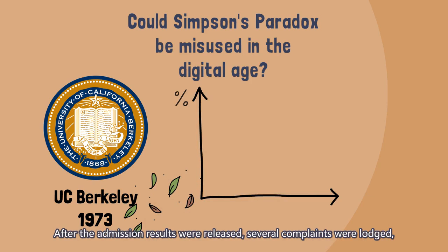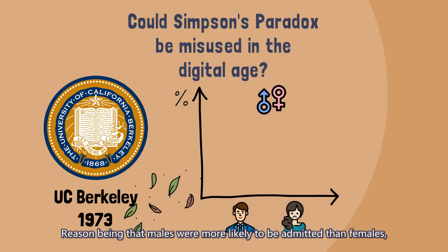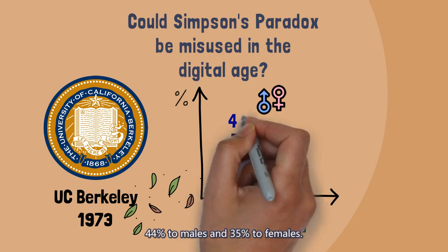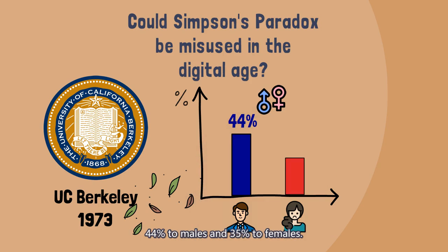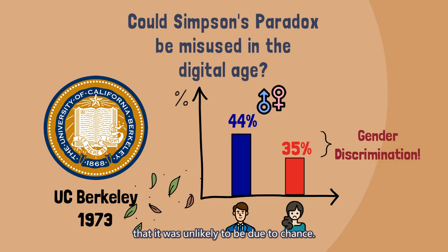After the admission results were released, several complaints were lodged, claiming that UC Berkeley's programs discriminated against women. The reason being that males were more likely to be admitted than females, 44% to males and 35% to females. The statistical difference of 9% was so significant that it was unlikely to be due to chance.